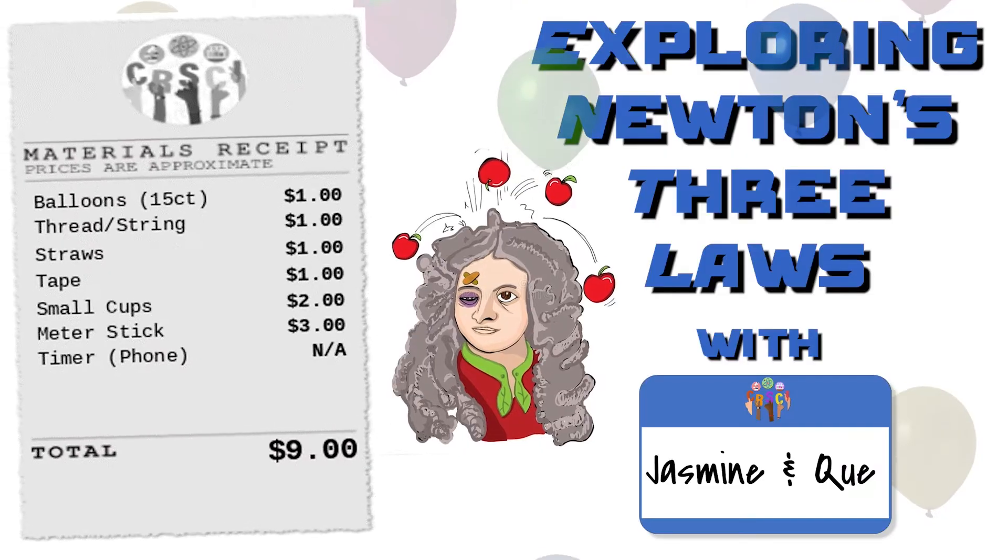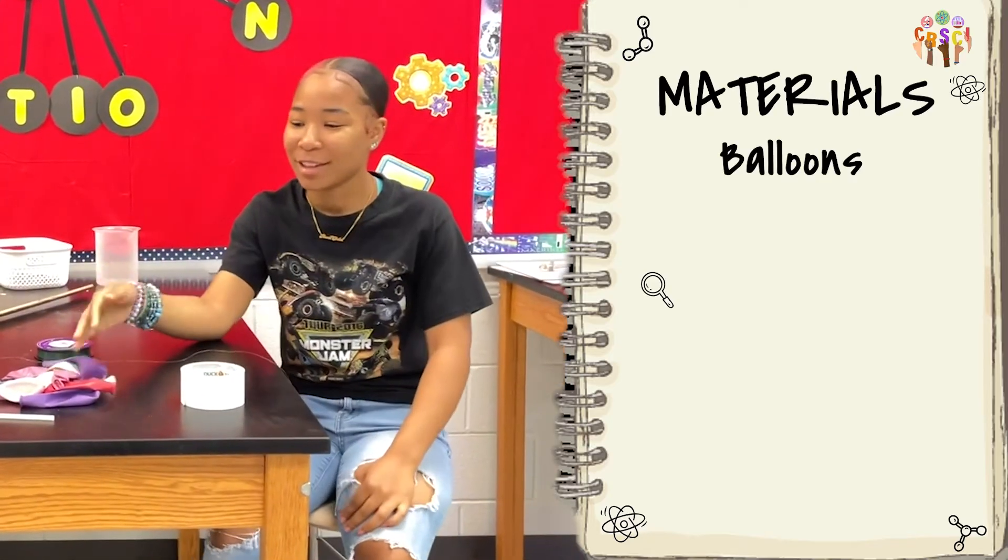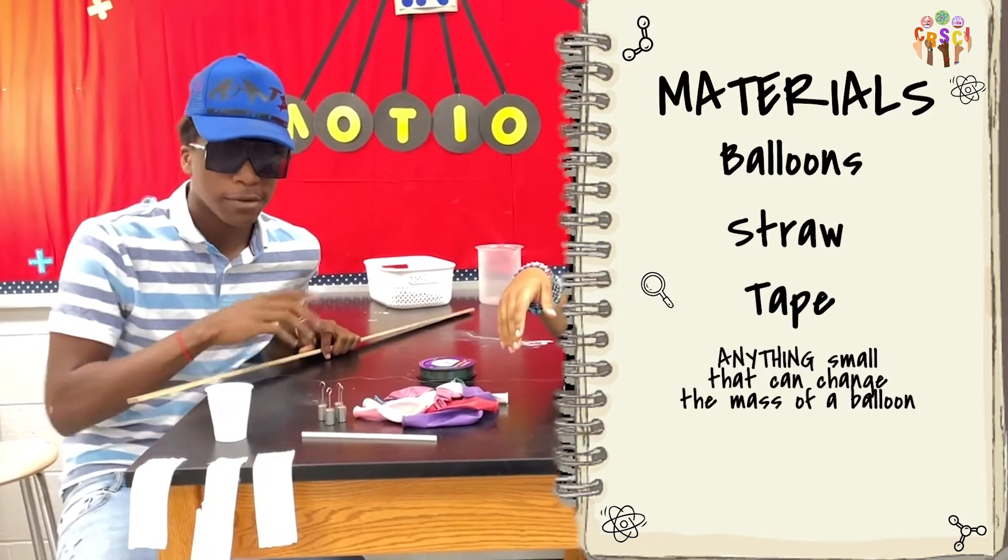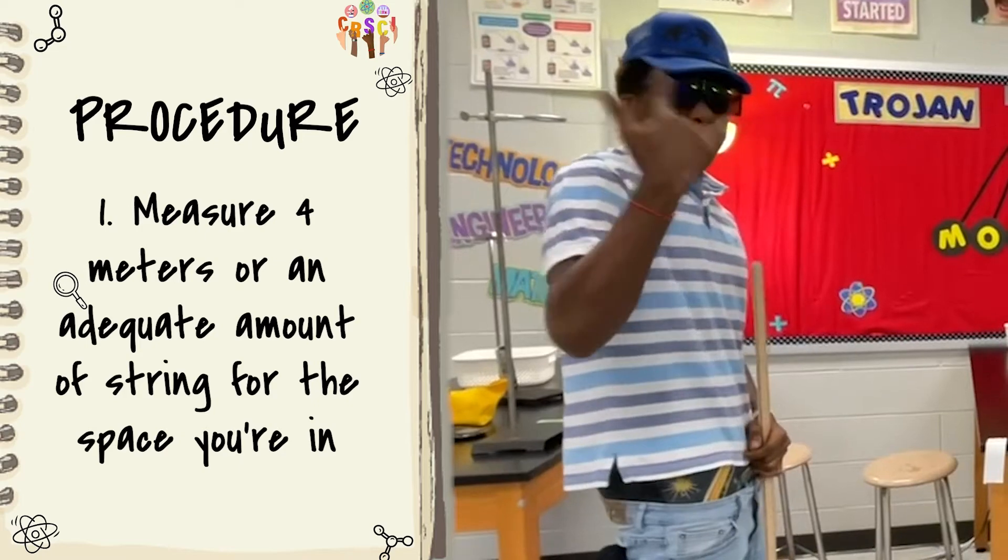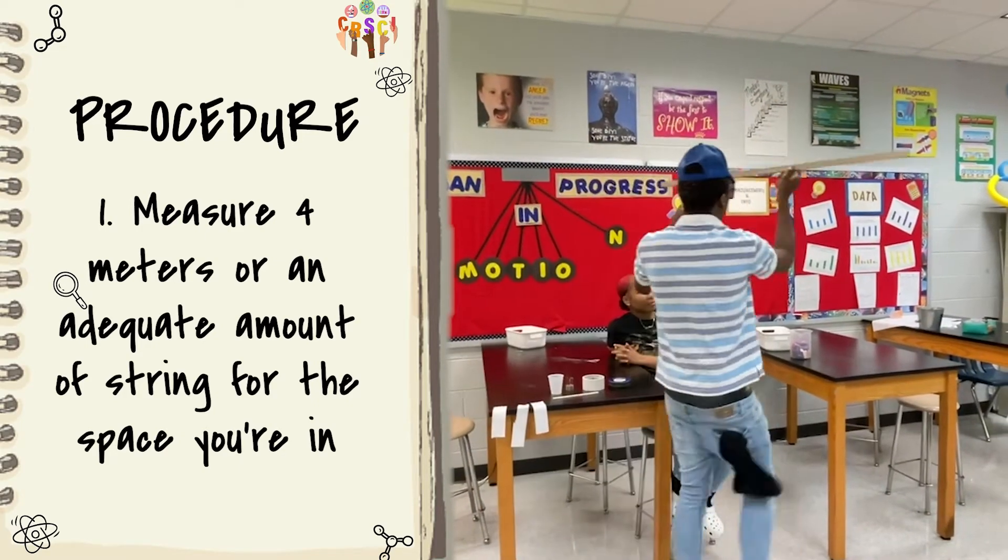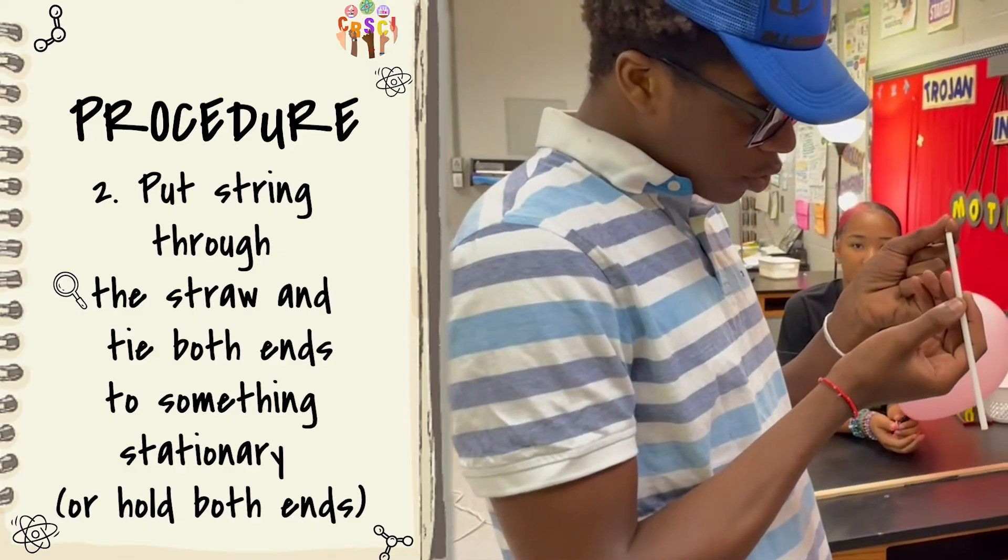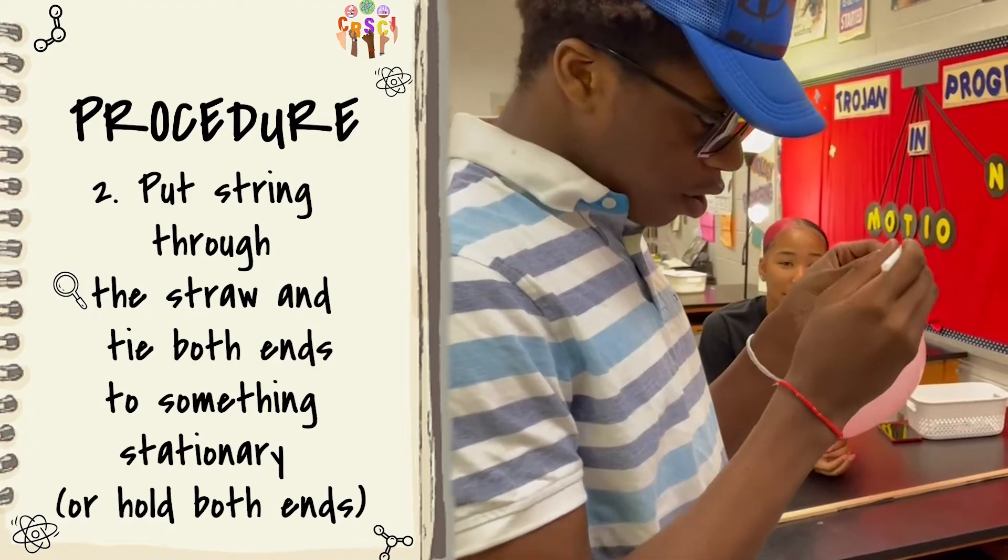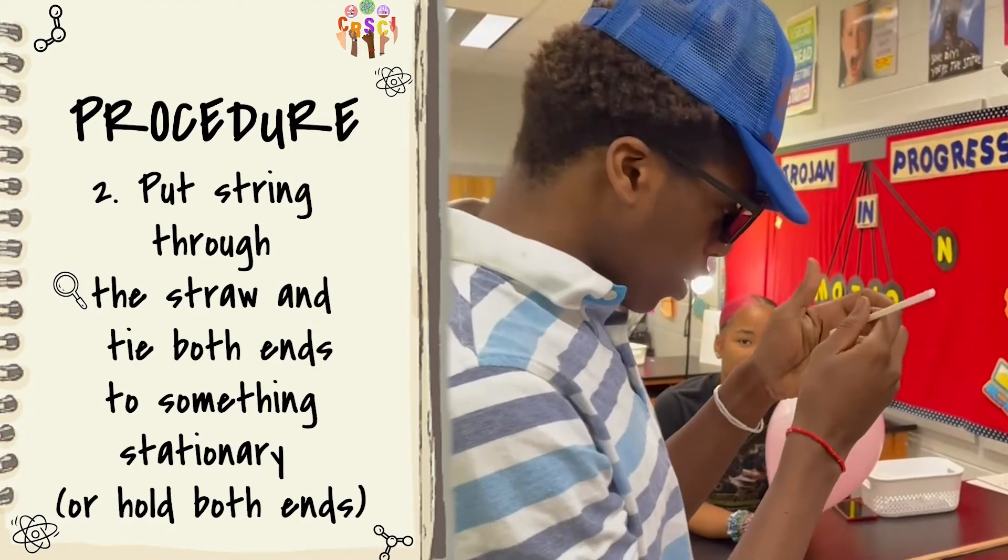And all you need is a balloon and some other stuff, but I'm not going to list them too because I'm not at work right now. So what you need: balloons, a straw, tape, some string, and strength. Okay, so now we're going to measure four meters of string for the lab. All right, so we're going to put the piece of string through the straw and tie it to this location on your balloon.